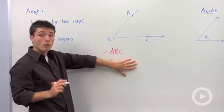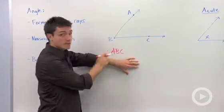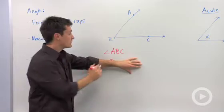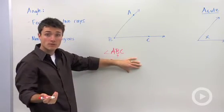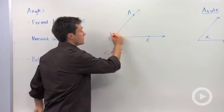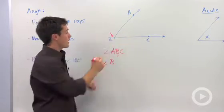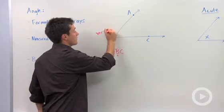Now there's something very specific about the way that I wrote angle ABC. Whenever you write the angle, its vertex must be the middle letter. But what is the vertex? The vertex is this point that is the common endpoint of your rays. So I'm going to label this as the vertex.